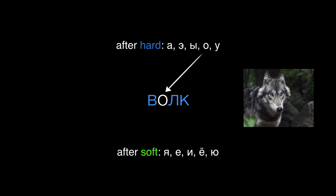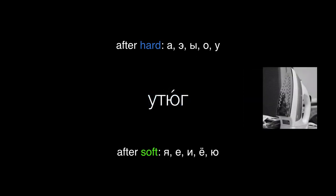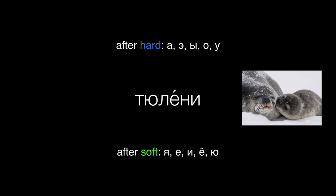The letter О shows that the В is hard. The other consonants are hard too, since there's no soft sign. Before the letter Ю, we have a soft Т, and the final Г is hard. All the consonants in this word are soft.